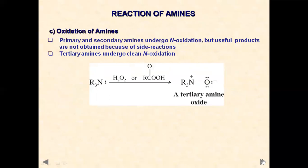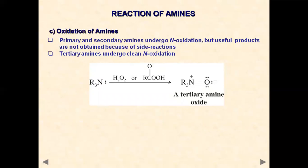Amines also undergo oxidation to give amine oxides. When primary and secondary amines undergo oxidation, we may get side products. However, when tertiary amines react, we get a clean N-oxidation. For example, a trialkylamine upon oxidation with hydrogen peroxide or a peracid gives N-tertiary amine oxide.